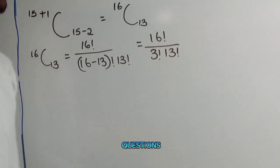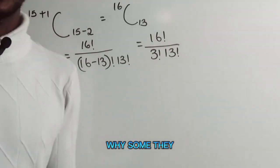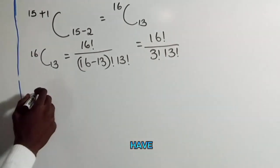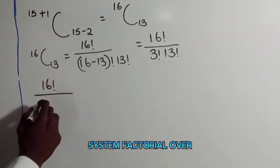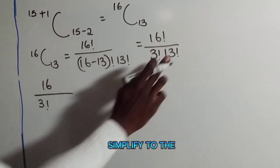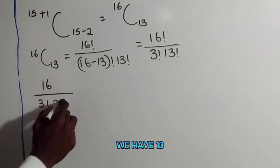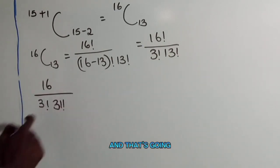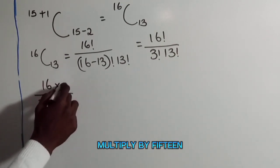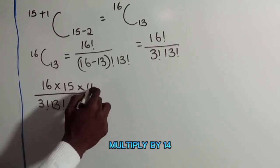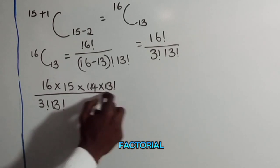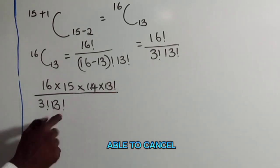Now in some questions this is the end of it, but if we simplify further, we expand 16 factorial down to 13 factorial: that gives us 16 multiplied by 15 multiplied by 14 multiplied by 13 factorial, all over 3 factorial times 13 factorial.